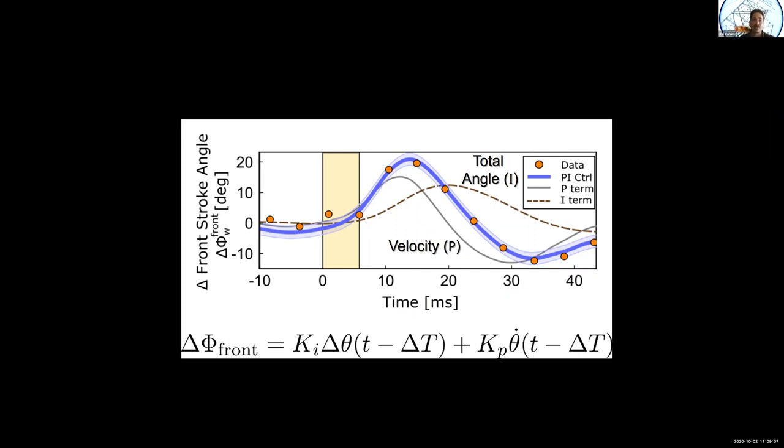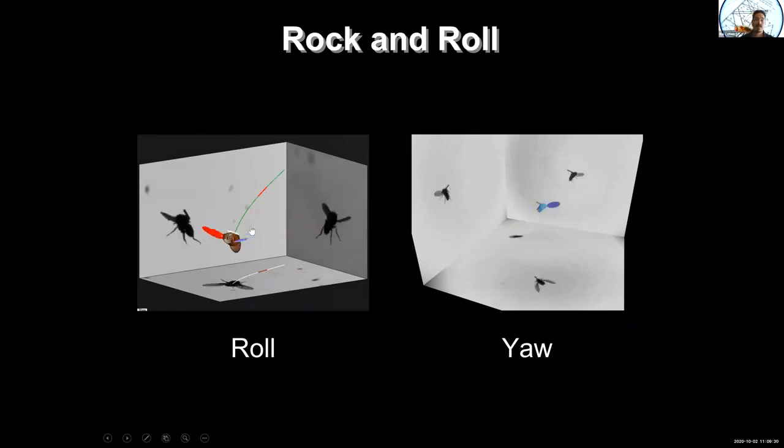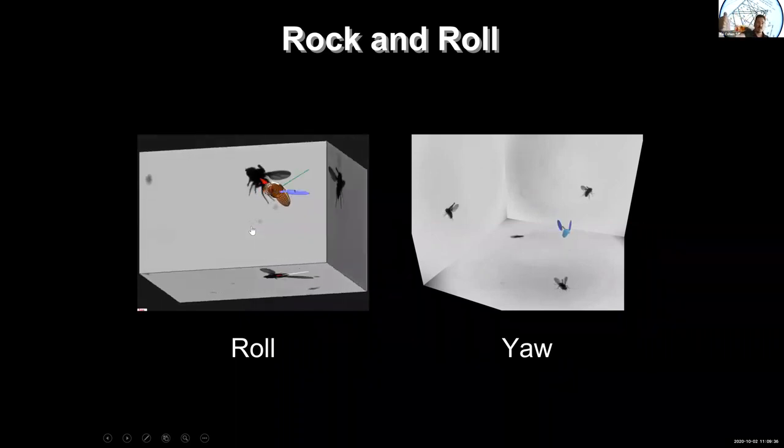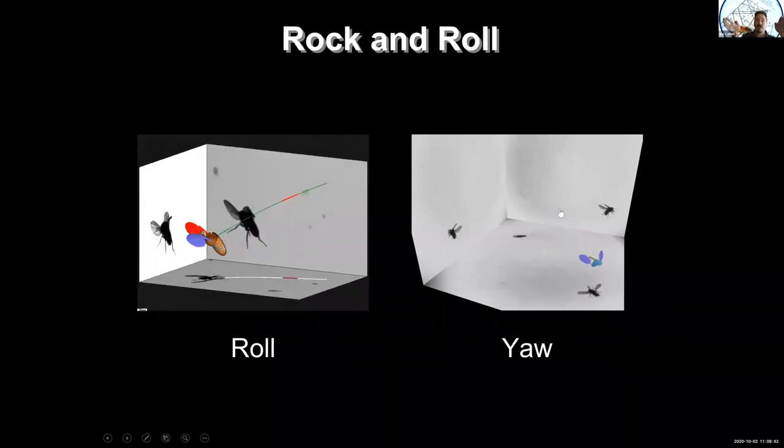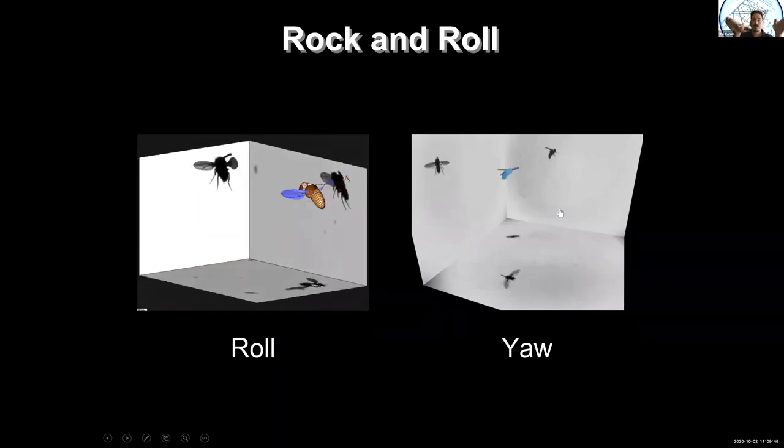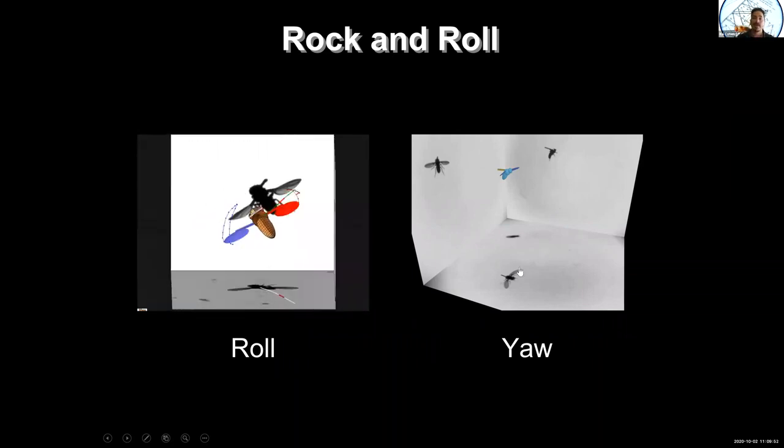This can be summarized by this very simple control theory model where you have a proportional term that's proportional to the angular velocity and an integral term that's proportional to the total angular displacement with some delta t that's basically there to give you the time delay due to the neural processing that has to go on in the fly. It turns out that this kind of control theory is a standard controller. It's called a proportional integral, sometimes you get a PID, proportional integral differential controller. It's the same controller that you might have in a sophisticated cruise control or a thermometer to set the temperature in the room. And it turns out that this formula also works when you roll the fly.